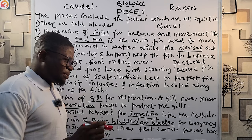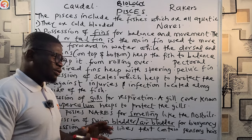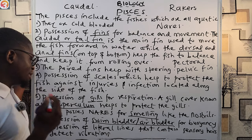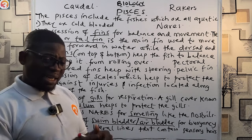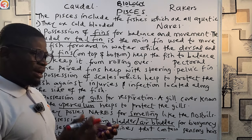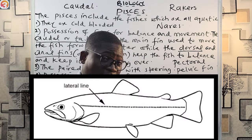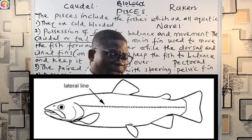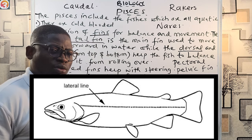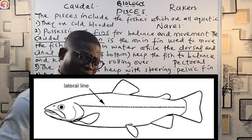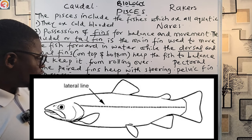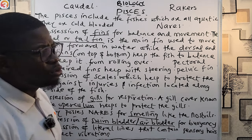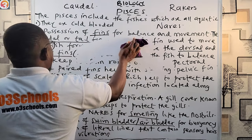Number eight: fishes possess lateral lines that contain sensory hairs to detect vibration. For example, if a moving ship or boat comes close to the fish's environment, the vibration is detected through the lateral lines. Fishes also have two-chambered hearts.